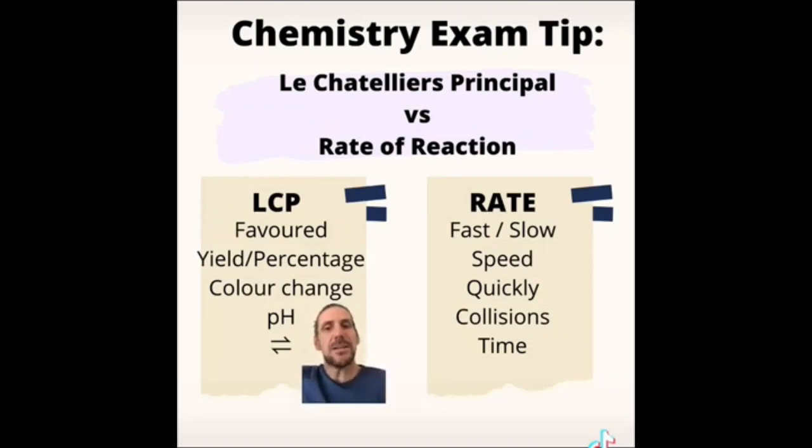To help with this, this tip is all about key words and the idea that Le Chatelier's principle, key words involved are things like direction favoured or yield and percentage. All these questions tell you that you need to reference Le Chatelier's principle. On the other hand, words like fast, slow, speed all talk about the rate of reaction and therefore you should talk about collision theory.